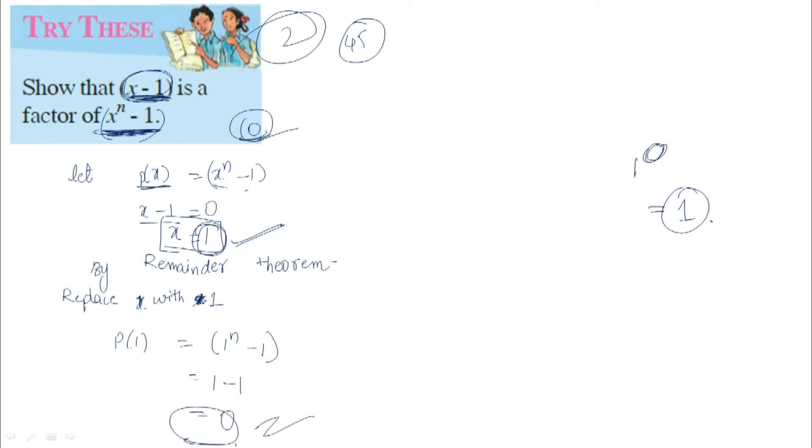We got remainder 0. As P(1) equals 0, x-1 is a factor of P(x). Since the remainder is 0, x-1 is a factor of P(x).